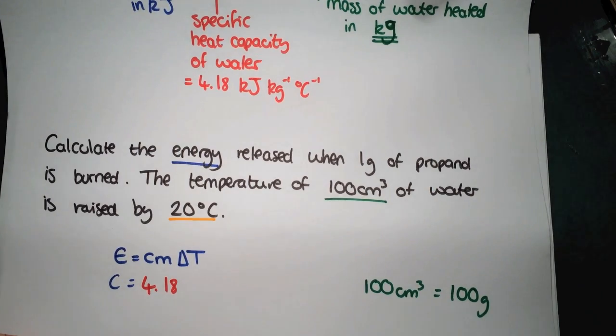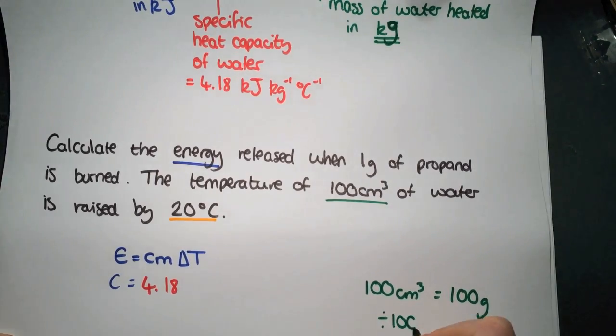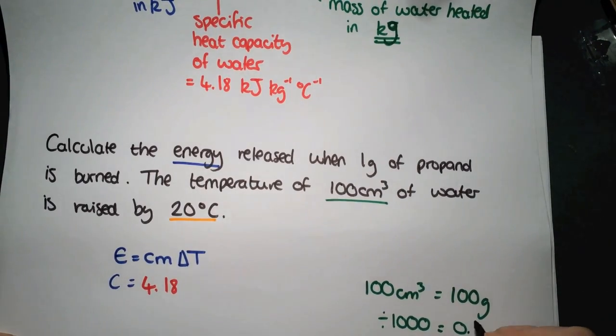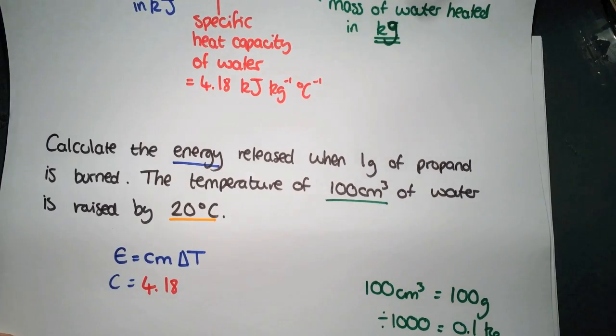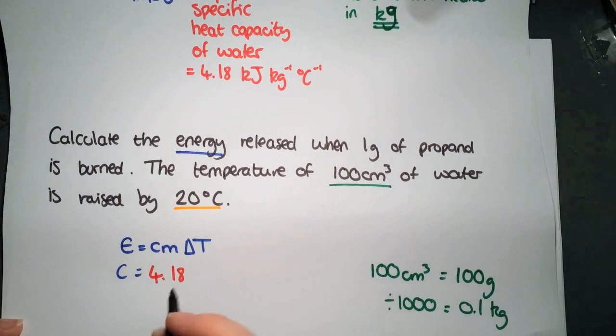We can convert between the two by dividing by 1000 to get into kilograms. So if we divide by 1000, we'll get 0.1 kilograms of water. This is the value that we are going to use in our equation.